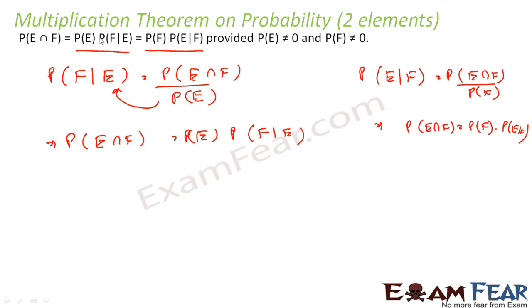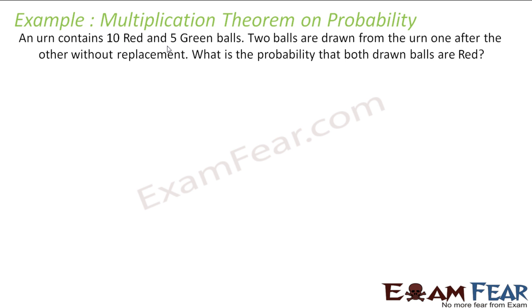So if you want to find the probability of intersection of E and F, and you know the conditional probability of F given E and the probability of E, you can just multiply them and get the answer. Or if you know the probability of E given F and the probability of F, you can multiply these two and get the answer. That's the formula.